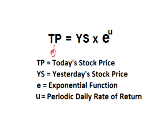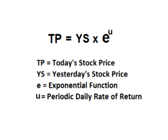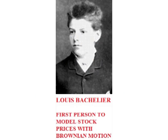Each day, the price of an asset such as a stock is the previous day's price times E raised to some value U. The U is the periodic rate of return — the rate that the asset increased or decreased that day. Because the rate of return on an asset is a random number, to model the movement and determine the possible future values, we use a formula that models random movements. This was first done about a hundred years ago by a man named Louis Bachelier, who applied Brownian Motion — a formula used to model random movements in physics — to the movement of the price of an asset.